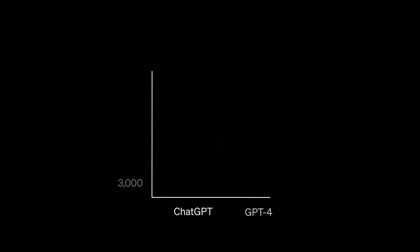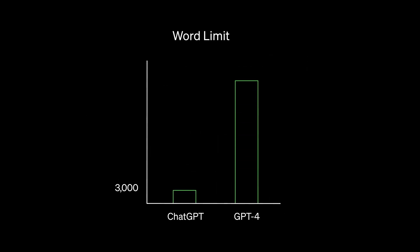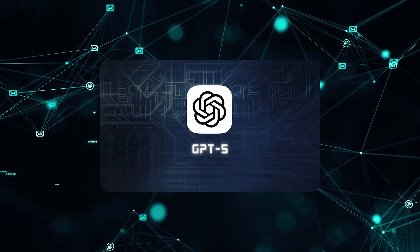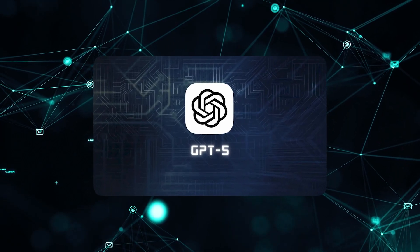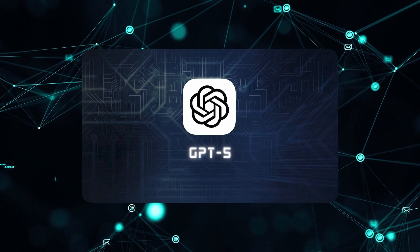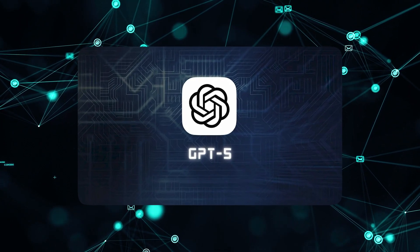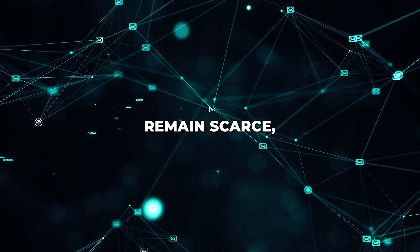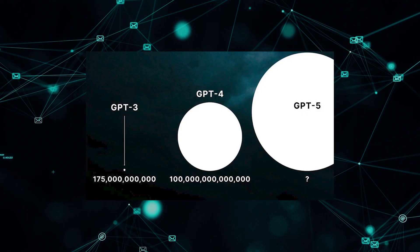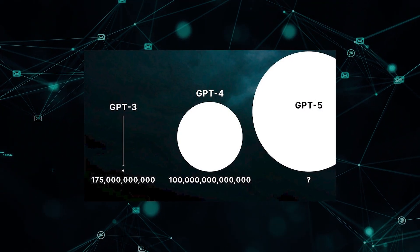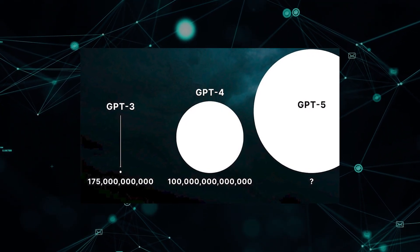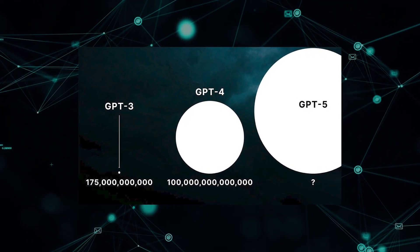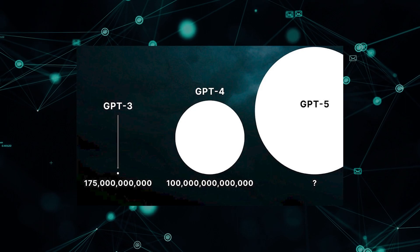From summarizing text to answering questions, GPT-4 displays strong performance thanks to its vast scope. GPT-5 is positioned to far surpass its predecessor in size, accuracy and versatility. While details remain scarce, many experts predict GPT-5 may wield trillions of parameters, dwarfing all previous language models.